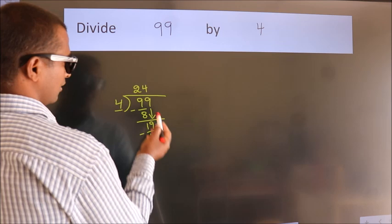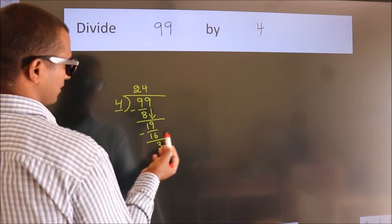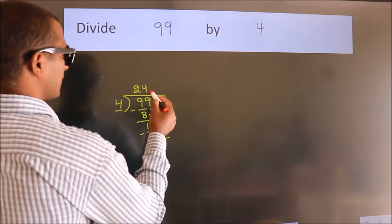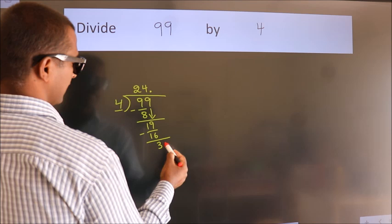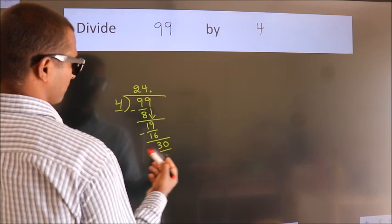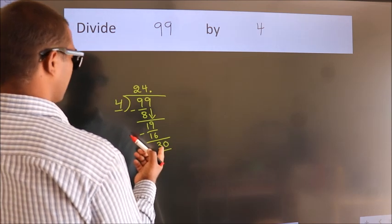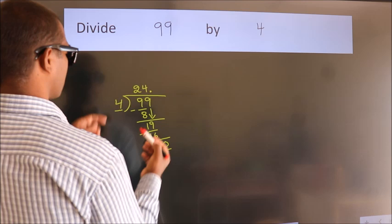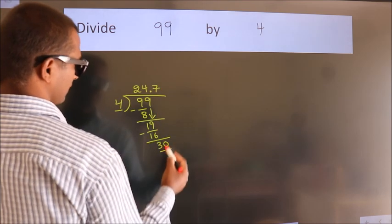After this, no more numbers to bring it down. So, what we do is, we put dot, take 0. So 30. A number close to 30 in the 4 table is 4 sevens, 28.